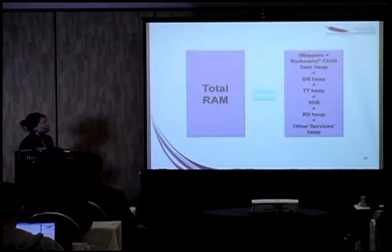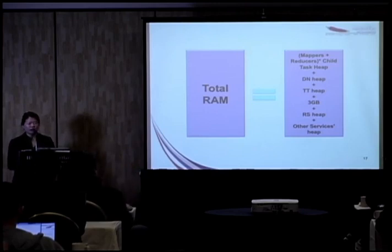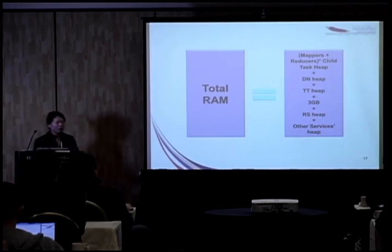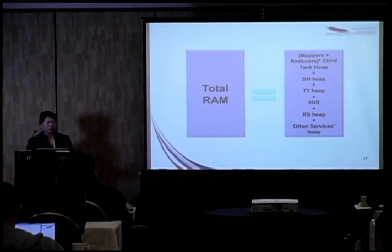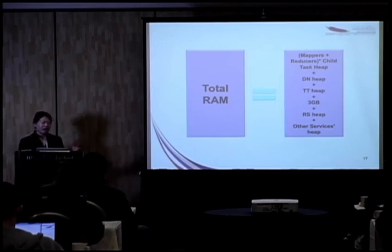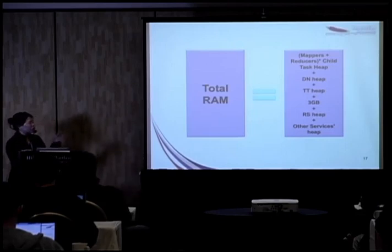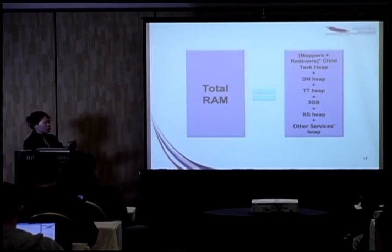One of our Cloudera engineers, Tal Lipkin, said it best when he tweeted: if the sum of your max heap size exceeds your physical RAM minus three gigabytes, go directly to jail — do not pass go, do not collect $200. We've seen users get out-of-memory errors and start increasing their NameNode heap, then their TaskTracker heap, and more — forgetting that at the end of the day it all needs to add up to your total RAM. Increasing one thing has consequences on other parameters.